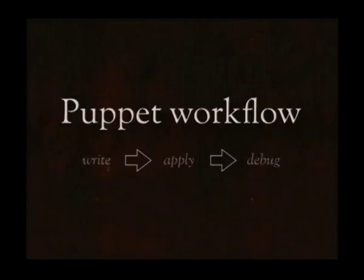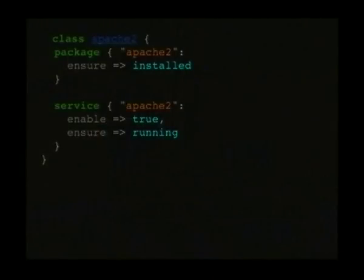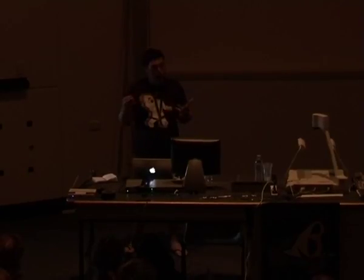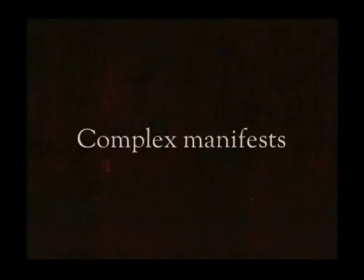A traditional Puppet workflow is: write your manifests, apply those manifests to a machine, then debug them — because you probably never get anything right the first time. Puppet is declarative, so you can't guarantee that something written in a manifest will be executed in the order you've written it. For example, there are cases where the Apache service will try to start before the Apache 2 package is installed. So you set up an explicit requirement of the service on the package — that's Puppet Relationships 101. This starts getting very complex when you have lots of manifests in your environment.